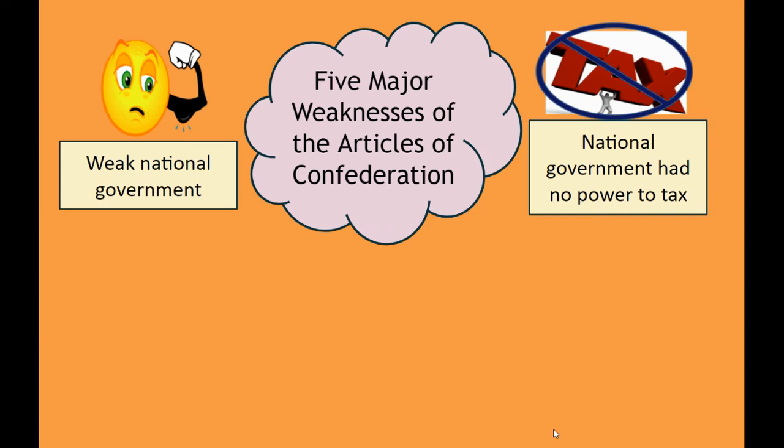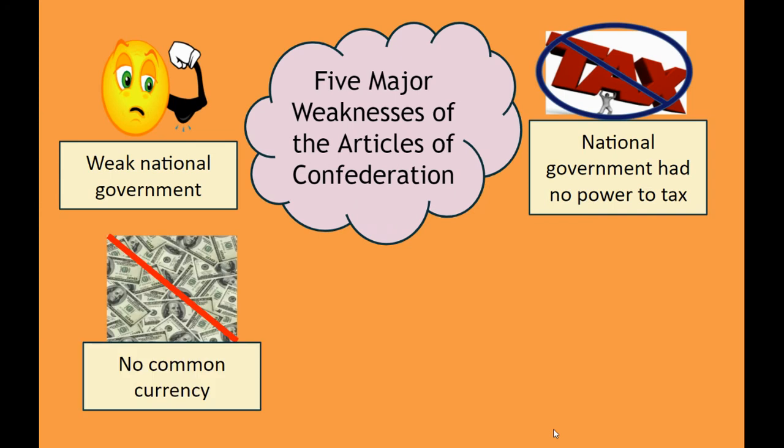Another weakness of the Articles of Confederation was that the national government had no power to tax. States could tax the people living in that specific state, but the national government couldn't tax. Another weakness is that there was no common currency. Currency is a vocab word that means money. So each state had its own currency, its own dollar bill. If you lived in Massachusetts, you had the Massachusetts currency, but if you had to travel to Georgia, you wouldn't be able to spend your money because the currency was different for each state.